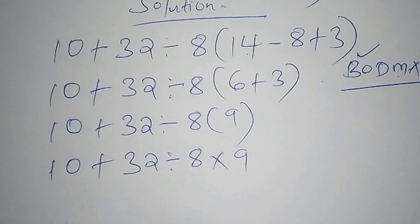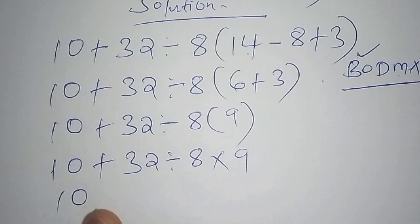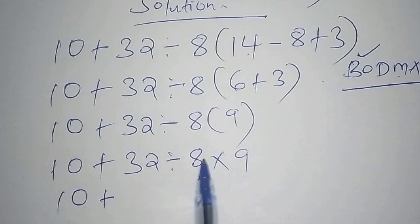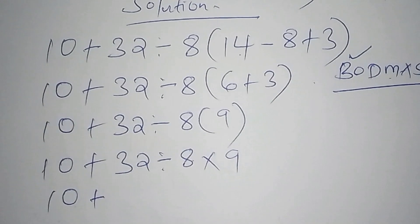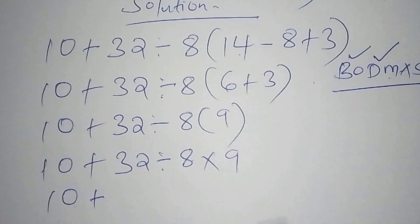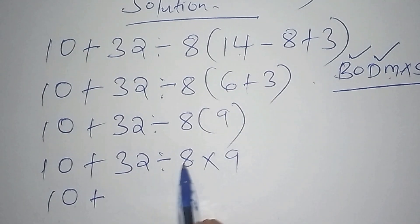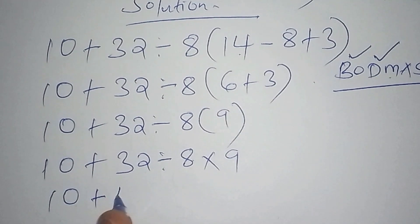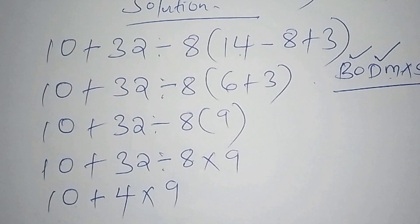So after working it out by 9, so now we move to the next step where now we pick 10 there, 10 plus then 32 divide by 8. So we want to work out this 32 divide by 8. Why am I saying that? Because now the division comes second after working out the number inside the bracket. So now we shall have 32 divide by 8. So there we shall have 4. Then 4 now times 9.